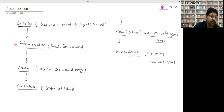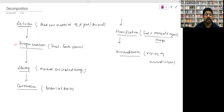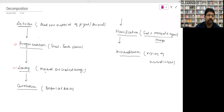Decomposition steps: first is fragmentation — snails and earthworms eat dead leaves and break them into small fragments of organic material. After fragmentation, the minerals and nutrients in those fragments dissolve in water and move toward the inner layers of the ground — this process is called leaching. Leaching is the process in which minerals are washed away from the top layer of soil.